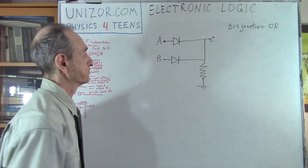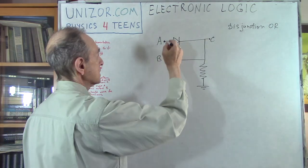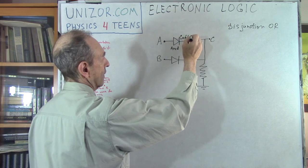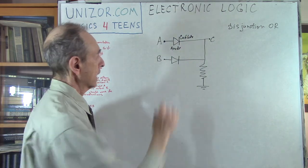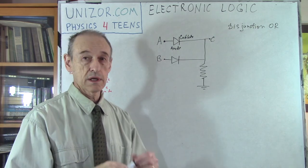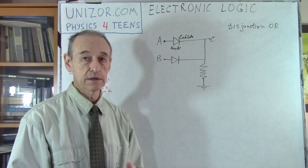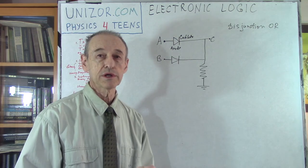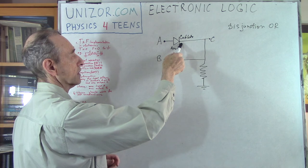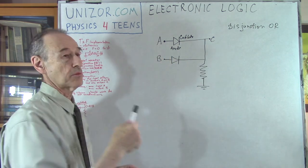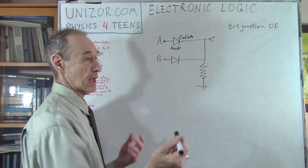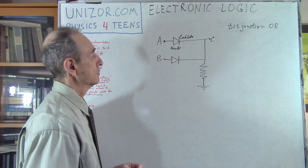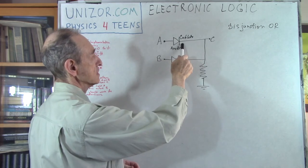Consider this schema: you have contact A connected to the anode of a diode, and contact B also connected to the anode of another diode. Then we have a resistor to the ground, and this is contact C. My statement is that this very simple schema on a primitive level implements disjunction. Remember what a diode is: it has an anode and a cathode. The cathode is heated, and there is an electron cloud via thermionic emission. The electrons on the cathode are attracted by the positive anode, so there is a flow of electrons from cathode to anode — one way only.